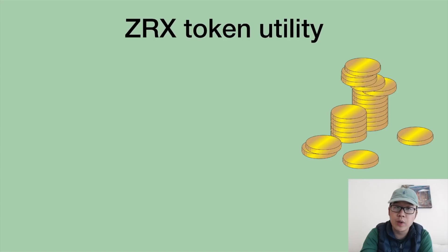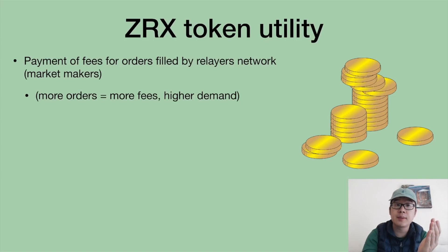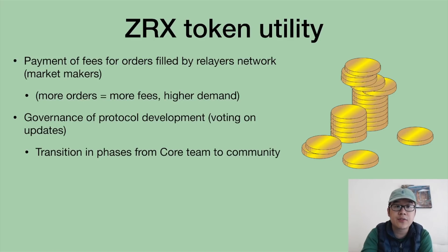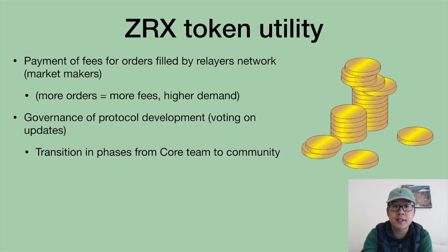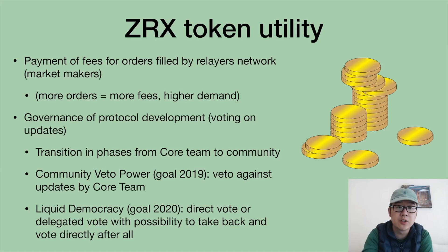What about the ZRX token and its utility? First, it's used for payment of fees for orders filled by the second-layer relayers network — the market makers. More orders means more fees, which drives demand for ZRX. Second, it's required for governance of protocol development — voting for updates. There are several phases transitioning control from the core team to the community. The community will get veto power roughly in 2019, and a liquid democracy goal for 2020 includes direct or delegated voting with the possibility to take back and vote directly.